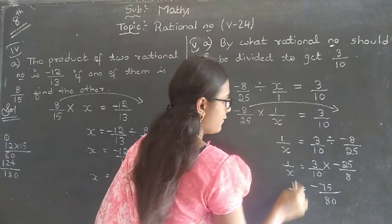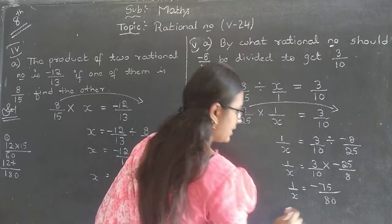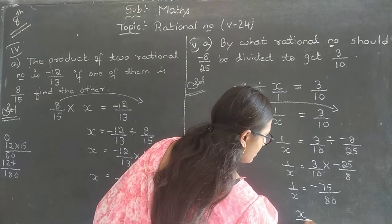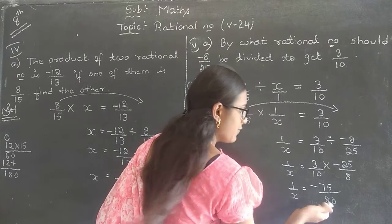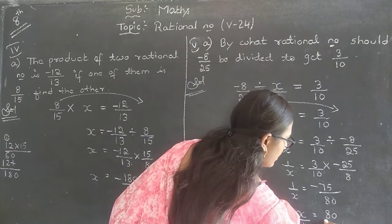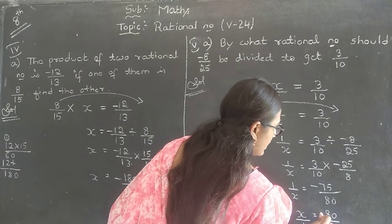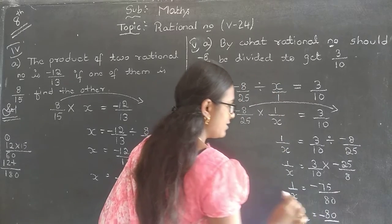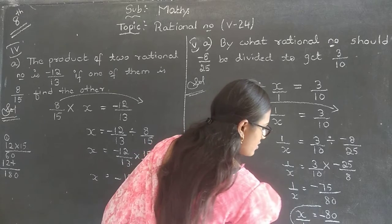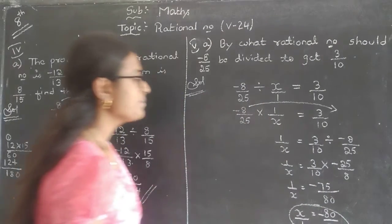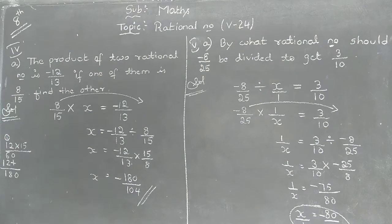So, 1 by x which will be equal to plus into minus is minus 25 3 is 75 divided by 8 10 is 80. If 1 by x is minus 75 by 80, what about x? It is the reciprocal of this one which means 80 by 75. While taking the reciprocal, we should not change minus. We should keep it wherever we are. So, x value it is said to be minus 80 divided by 75.